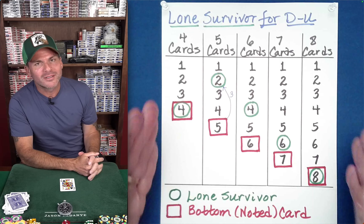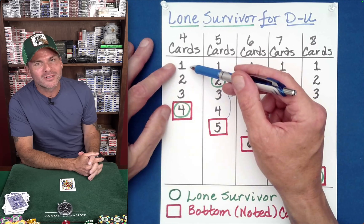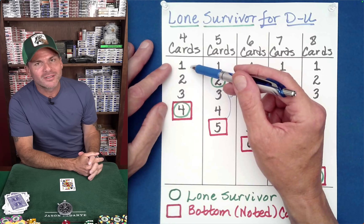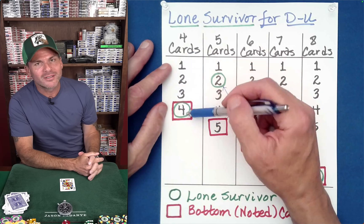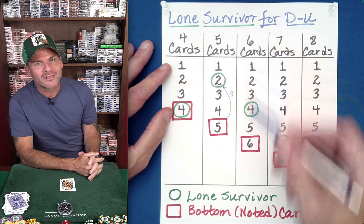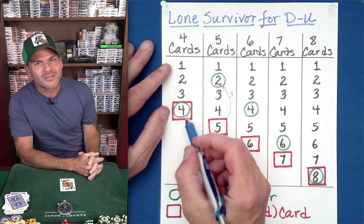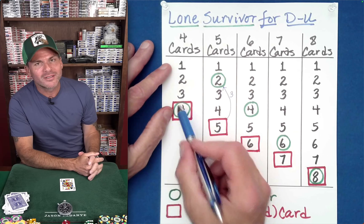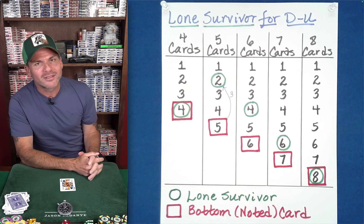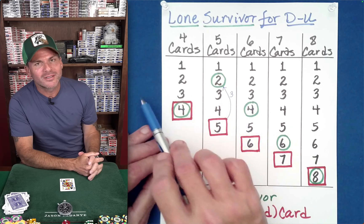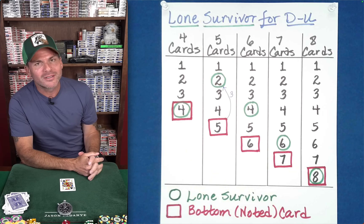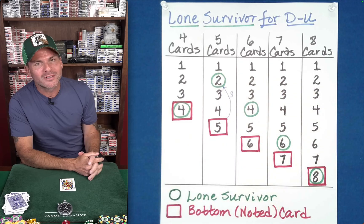That same thing happens with all of these cases. For four cards, moving the top card to the bottom eight times just goes through the whole packet twice, restoring the cards to the original order — and the bottom card is already the lone survivor. Same thing for eight cards. Moving the top card to the bottom eight times, in all cases for four to eight cards, will position the original bottom card in the lone survivor position, guaranteeing it will be the one at the end of the down-under deal.